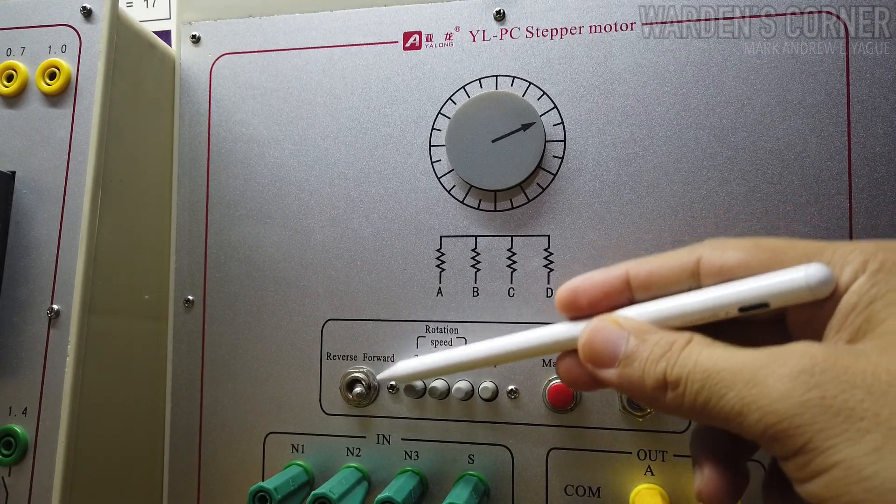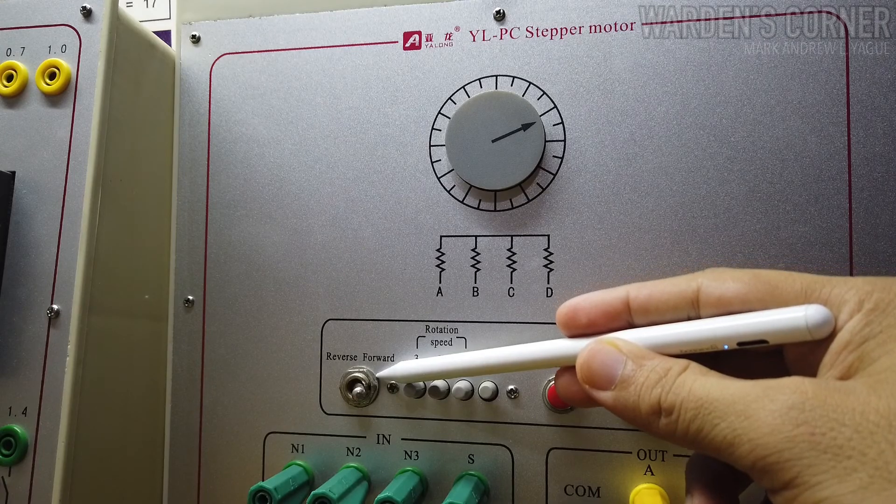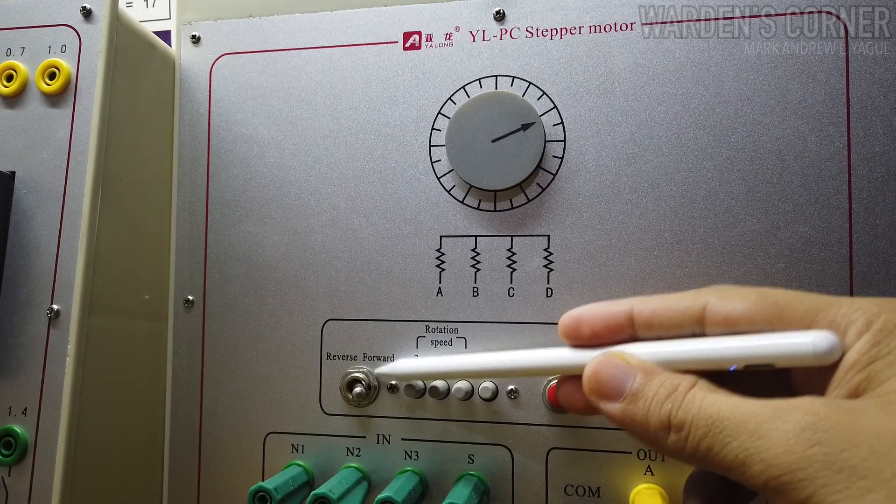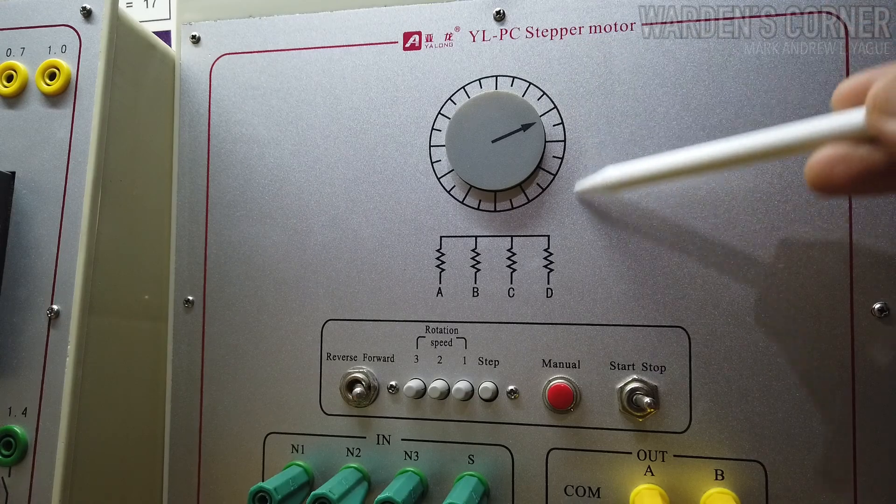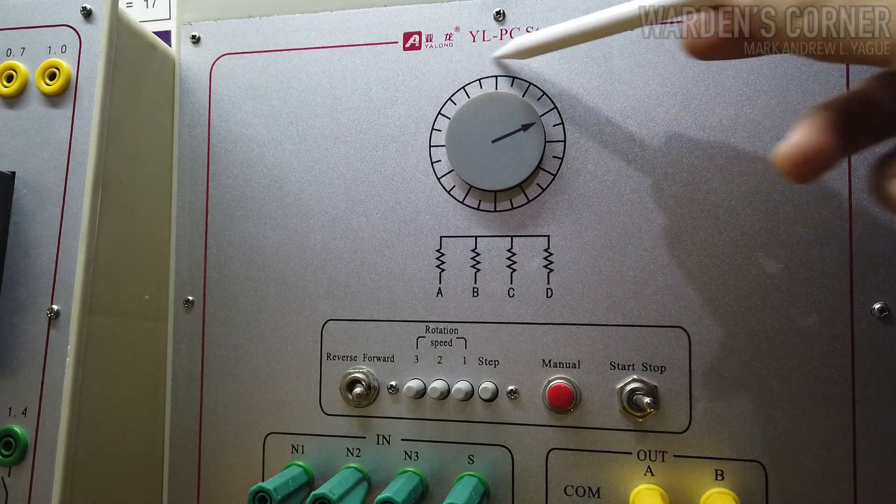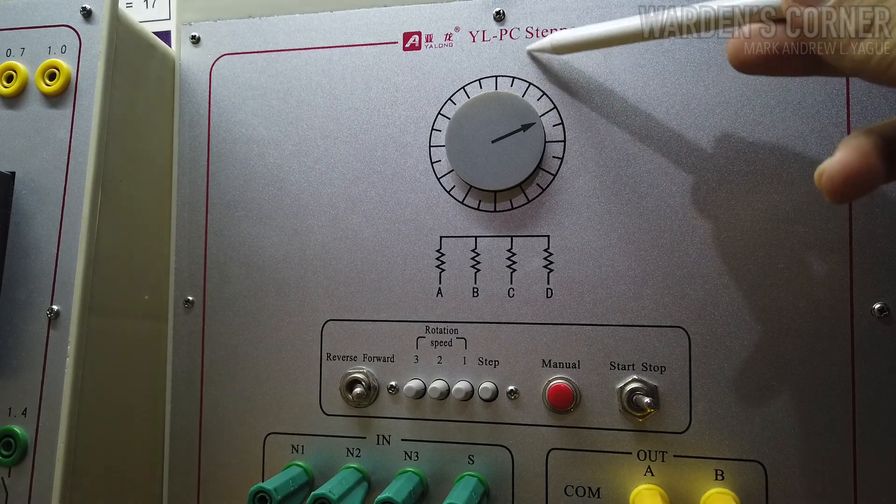Then, we have this forward-reverse switch to select the rotation direction of the motor. And last, our stepper motor. It has four output coils to be activated simultaneously in a 15-degree angular movement.